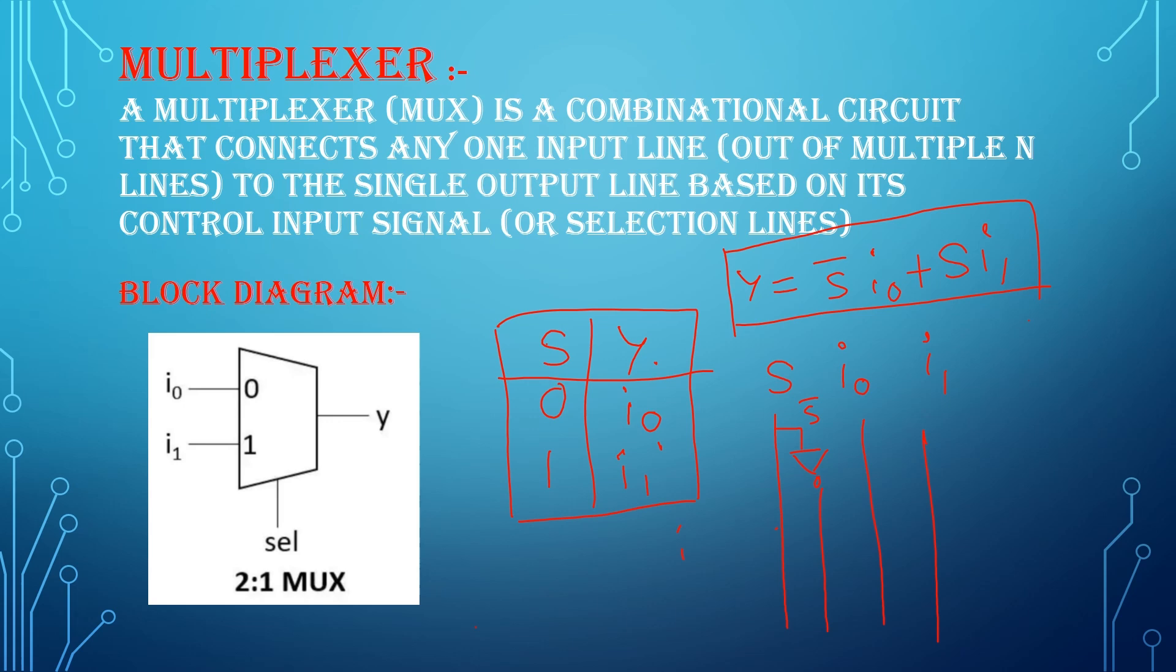Now I am connecting s bar and I0 to the AND gate, and s and I1 connecting to another AND gate.